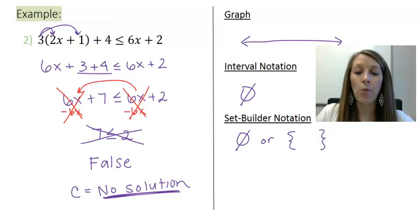And these are the two things that will happen in special cases. Either you end up with a true statement, which means any number works, or a false statement, which means absolutely no number works. And so be careful of these on your homework because they might show up when you least expect it.